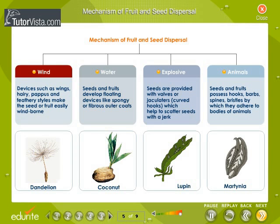Dispersal by wind. Devices such as wings, hair, pappus, and feathery styles make the seed or fruit easily wind-borne.